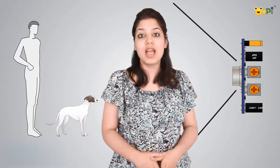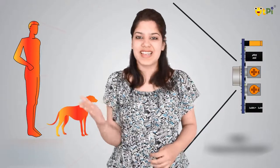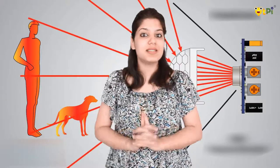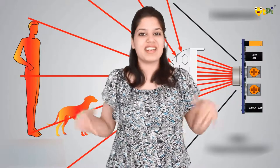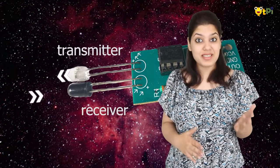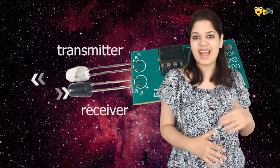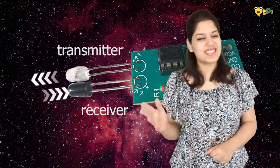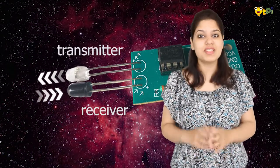It can measure the heat of an object as well as detect motion. It does this by either emitting or detecting the infrared radiation. It has a transmitter and a receiver — the transmitter transmits the IR rays, whereas the receiver receives the IR rays when an object is detected.